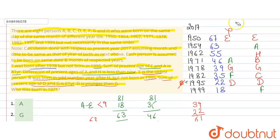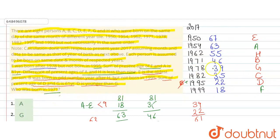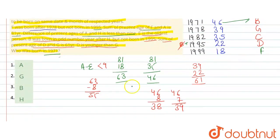This gives us the final arrangement. The wrong case is eliminated. The question asks who was born in 1971 — that is B... wait, at age 46, born in 1971, that is B. So option number 3, B, is the correct answer. Thank you.